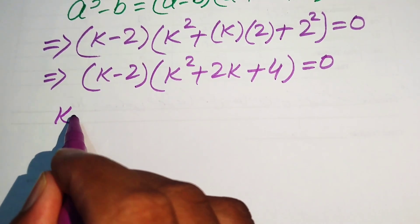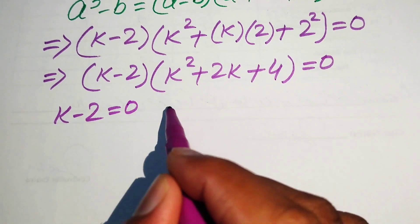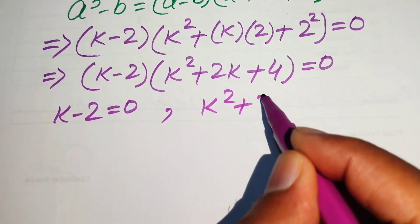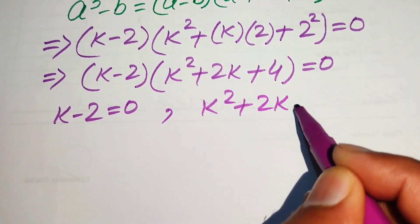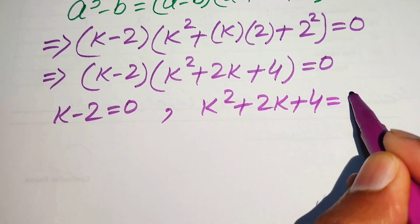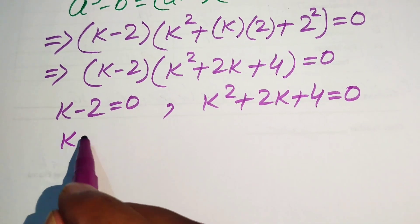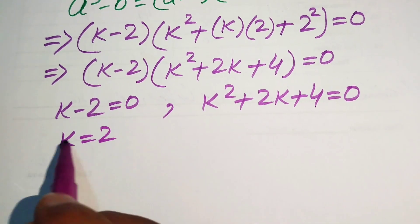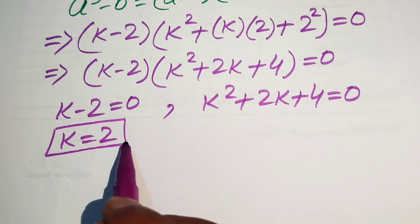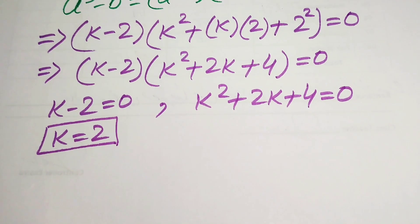Here we divide this into two cases. The first case gives us k minus 2 equals 0, from which we easily get k equals 2. This is the first real root of the given equation.